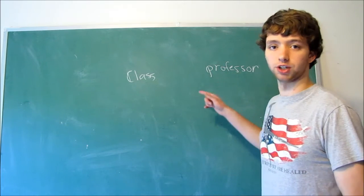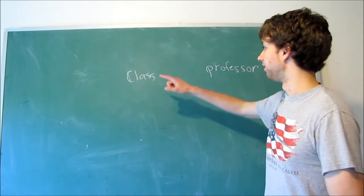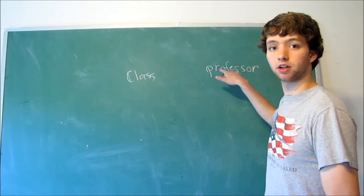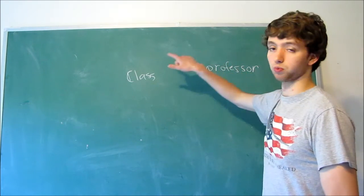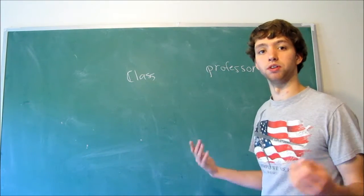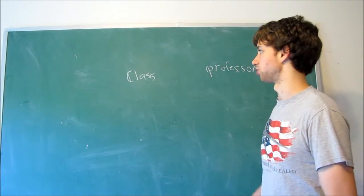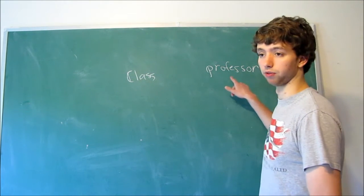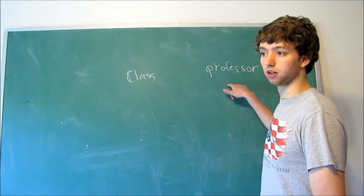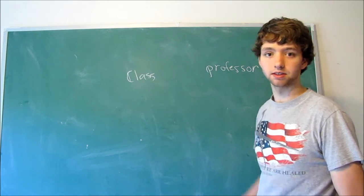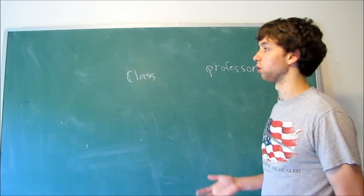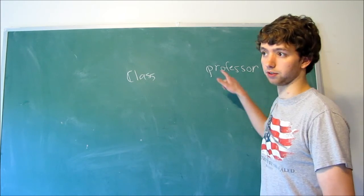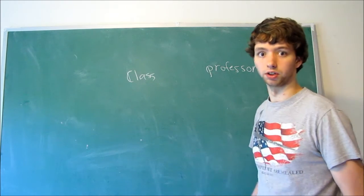If it's a one-to-one relationship, that means a class can be taught by one professor and a professor can teach one class. If it's a one-to-many relationship, that means either a professor can teach many classes, or the opposite — a class can be taught by many professors but a professor can teach only one class.